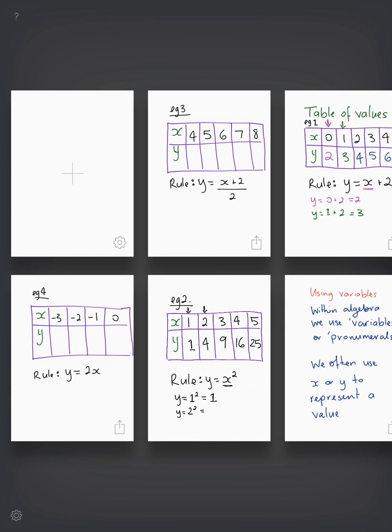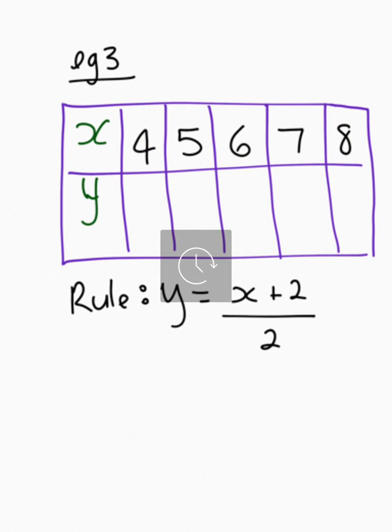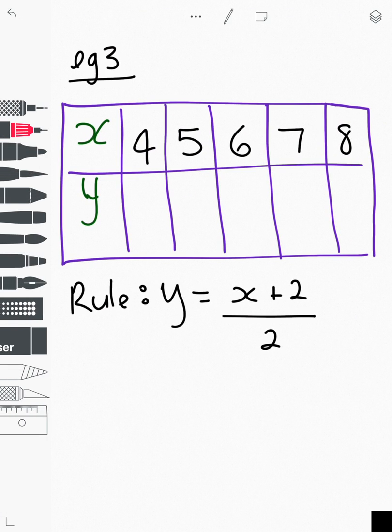Let's move on to example 3. Here, our new rule is y equals x plus 2, and then divided by 2. So let's look at the first column. The first column is 4, so y equals 4 plus 2 divided by 2. 4 plus 2 is 6, 6 divided by 2 is 3. Next one, 5 plus 2 is 7, 7 divided by 2 is 3.5.